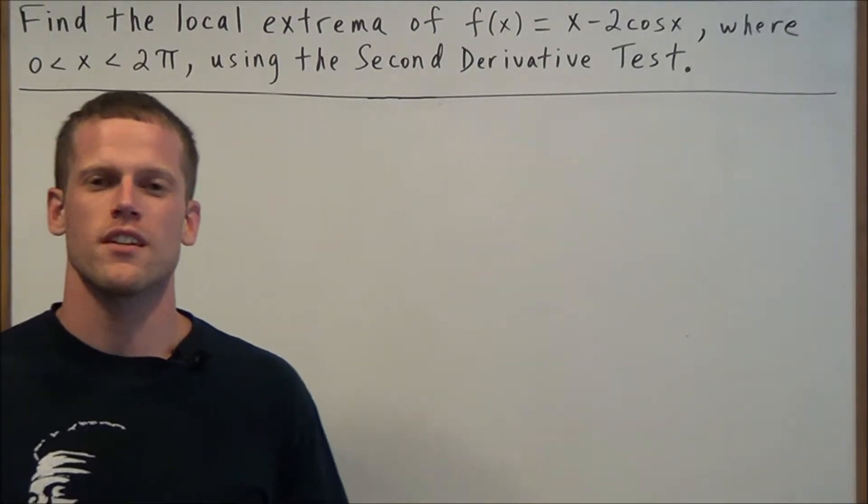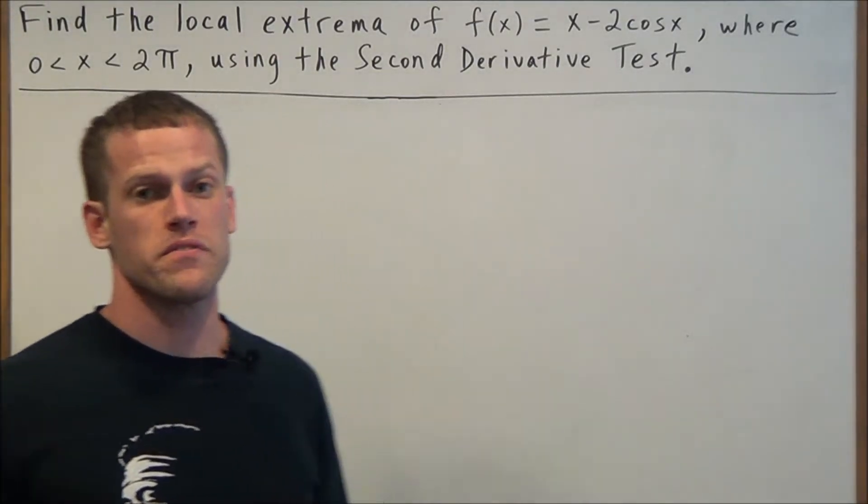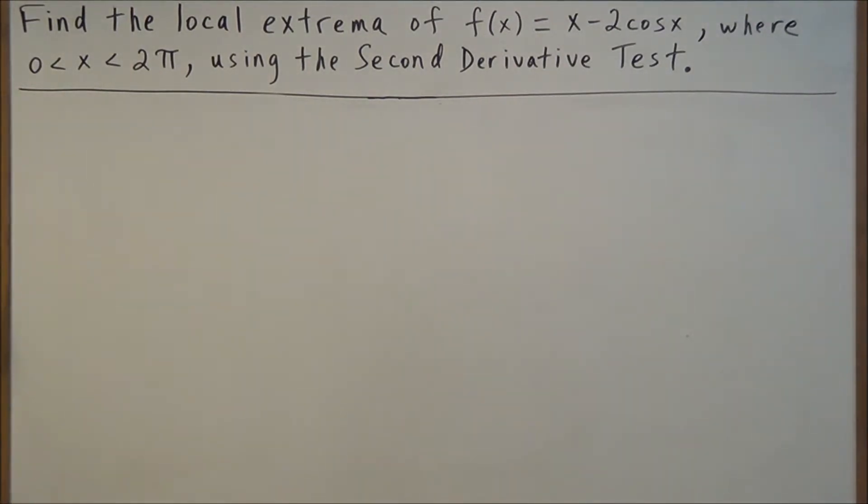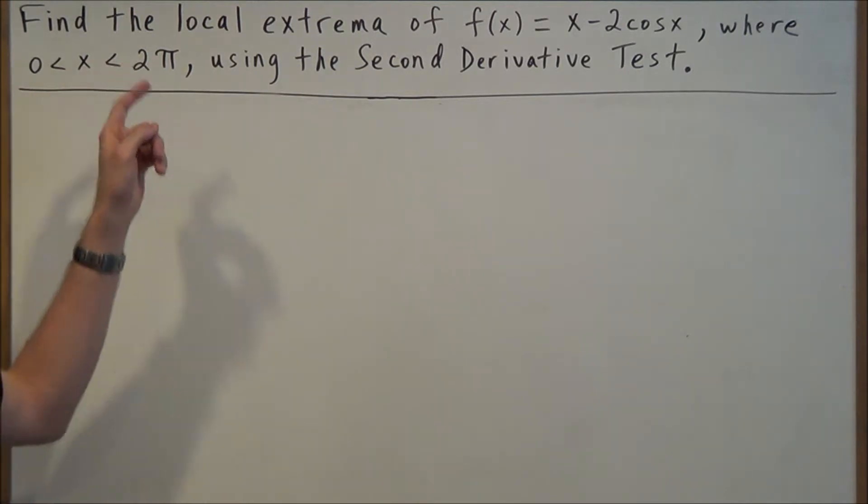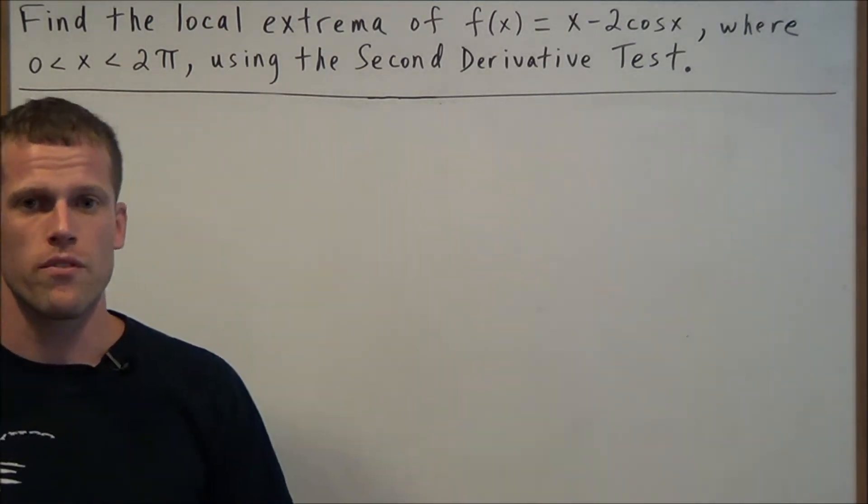Hi, my name is Vincent and today I want to take a look at how to use the second derivative test. We have: find the local extrema of f(x) = x - 2cos(x), where 0 ≤ x < 2π, using the second derivative test.